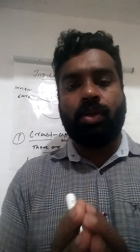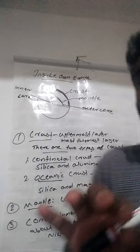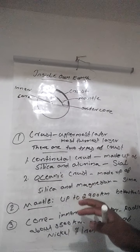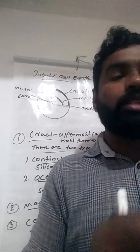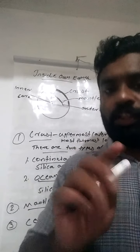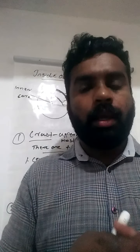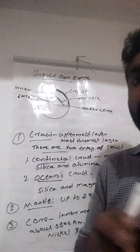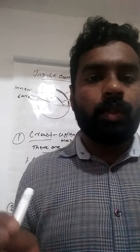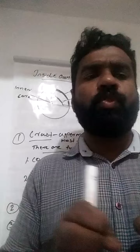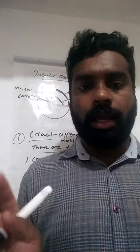The second layer of the Earth is known as mantle. It extends up to 2,900 kilometers. Mainly it is full of hot, molten magma.